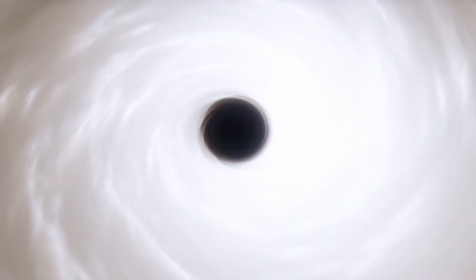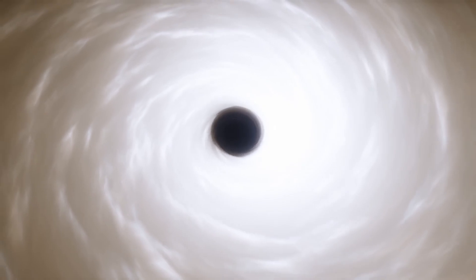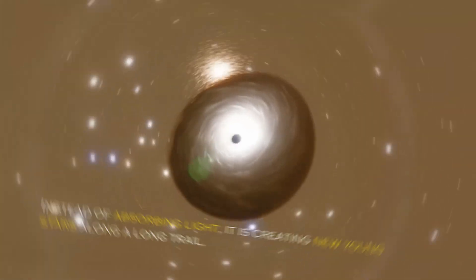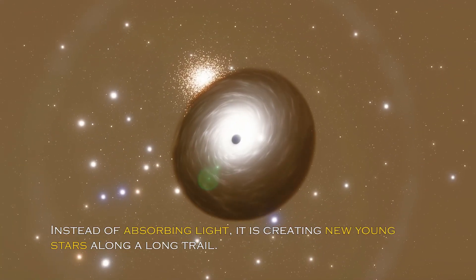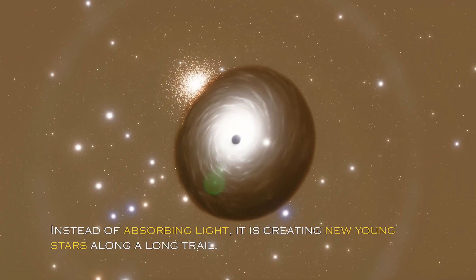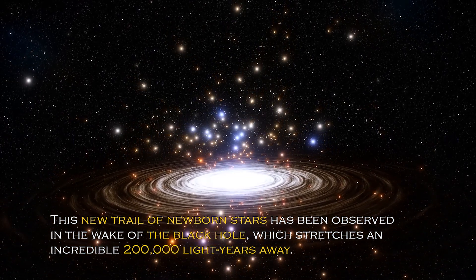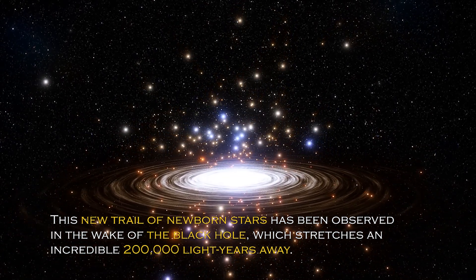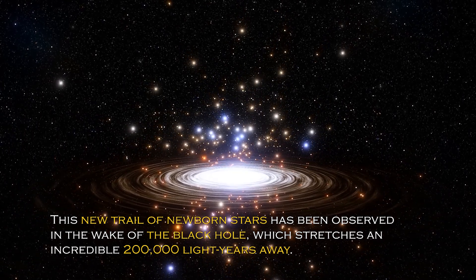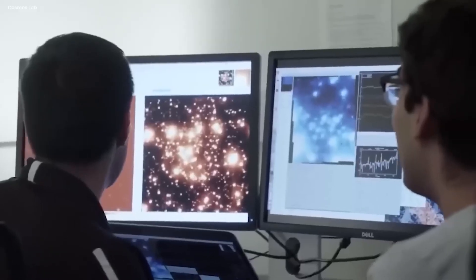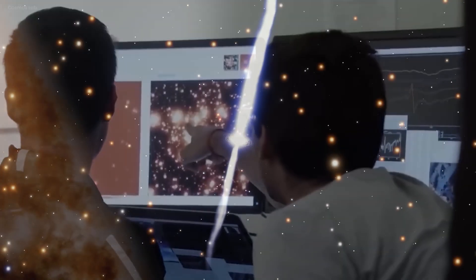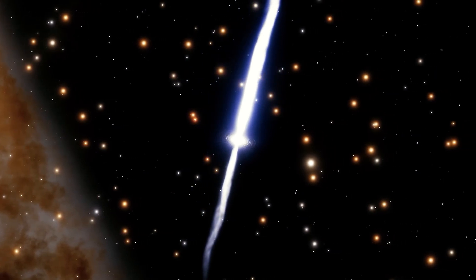Black holes are generally thought of as huge entities that pull everything including light towards them. But the recently observed black hole appears to be having the opposite effect. Instead of absorbing light, it is creating new young stars along a long trail. This new trail of newborn stars have been observed in the wake of the black hole, which stretches an incredible 200,000 light years away.